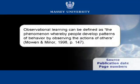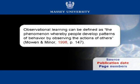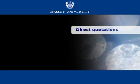Let's look at this example. Observational learning can be defined as, open quote, the phenomenon whereby people develop patterns of behavior by observing the actions of others, close quote. Open bracket, the author's surnames Moen and Biner, comma, followed by the year of publication, 1998, comma, and then the page number, page 147. Close bracket, full stop.